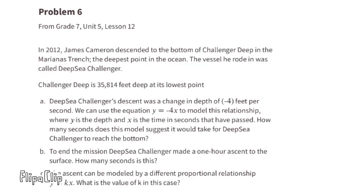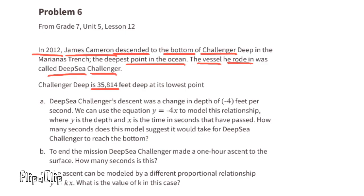Problem 6 from Unit 5 Lesson 12: in 2012, James Cameron descended to the bottom of Challenger Deep in the Mariana Trench, the deepest point in the ocean, in a vessel called Deep Sea Challenger. Challenger Deep is 35,814 feet deep at its lowest point. Part a: Deep Sea Challenger's descent was a change in depth of negative 4 feet per second, modeled by y equals negative 4x, where y is depth and x is time in seconds. How long would it take to reach the bottom?